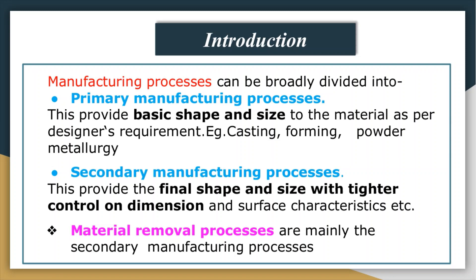As we know, our manufacturing processes are broadly divided into two groups. The first is the primary manufacturing processes, where basic shape and size is to be provided to the metal as per the designer's requirement — casting, forming, powder metallurgy, and similar processes come under this group. The second group is the secondary manufacturing processes, which provides the final shape and size with tighter control on dimension and surface characteristics.